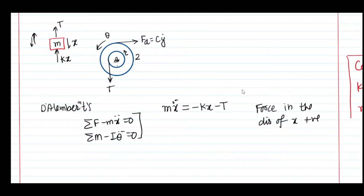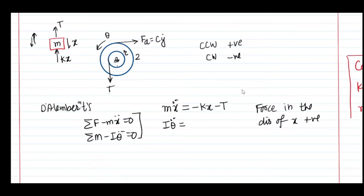For the second element, the rotation is counterclockwise, so moments in the counterclockwise direction are positive and clockwise moments are negative. I write I·θ̈ on the left-hand side. The moment due to tension T has perpendicular distance R so it contributes +T·R (counterclockwise). The moment due to c·y-dot acts in the clockwise sense so it is negative: minus c·y-dot·2R.